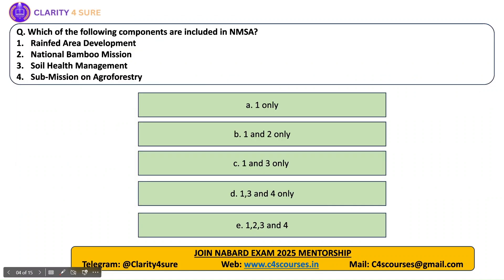Next question: which of the following components are included under National Mission on Sustainable Agriculture? The options are: Rainfed Area Development, National Bamboo Mission, Soil Health Mission, and Sub-mission on Agroforestry. All these are components of NMSA, so the answer is 1, 2, 3, and 4.